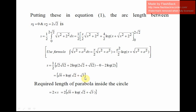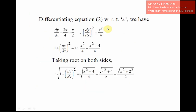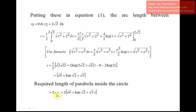This is the arc length in the first quadrant. Since we want the total arc inside the circle, we multiply by 2. So the required length of the parabola inside the circle is 2s = 2[√6 + log(√2 + √3)]. Hope you understand rectification in Cartesian form. In the next video, we will learn rectification in polar form.